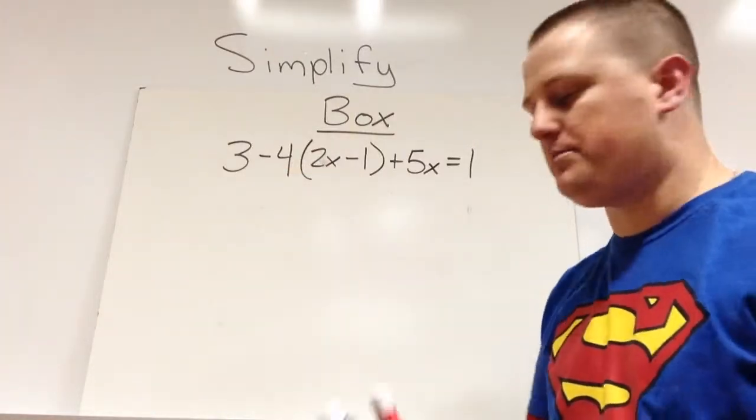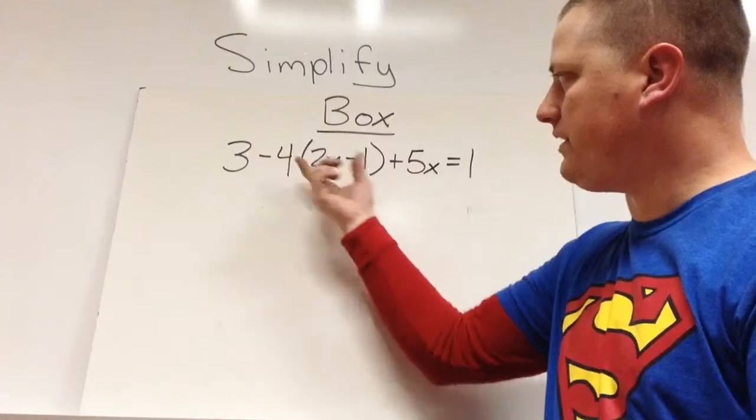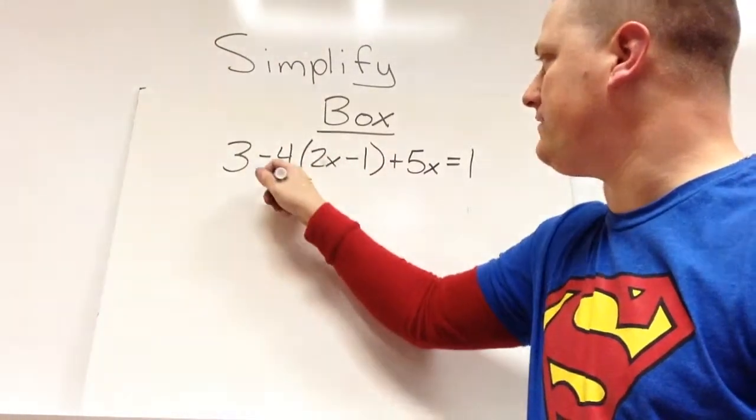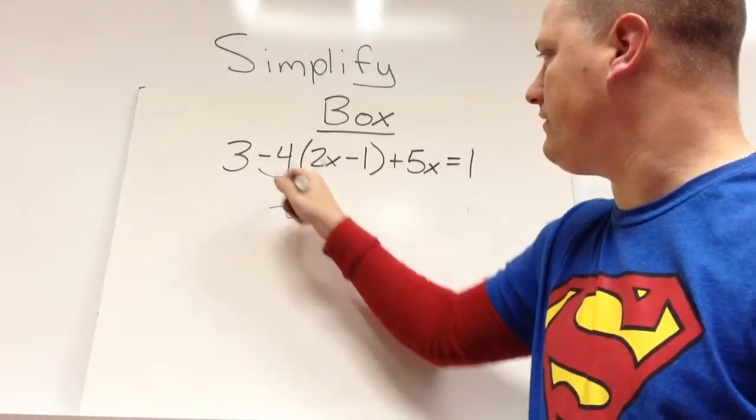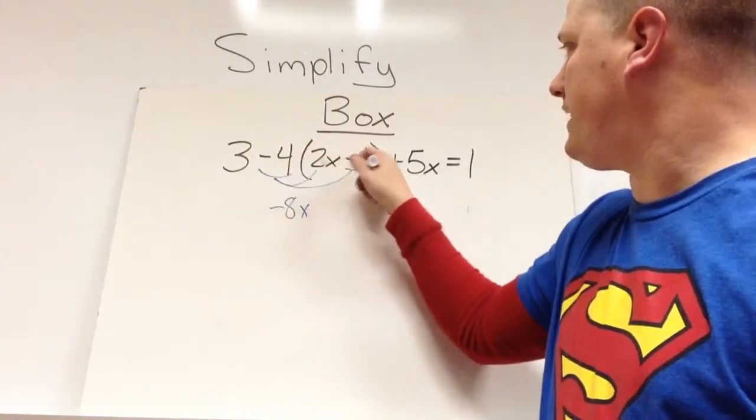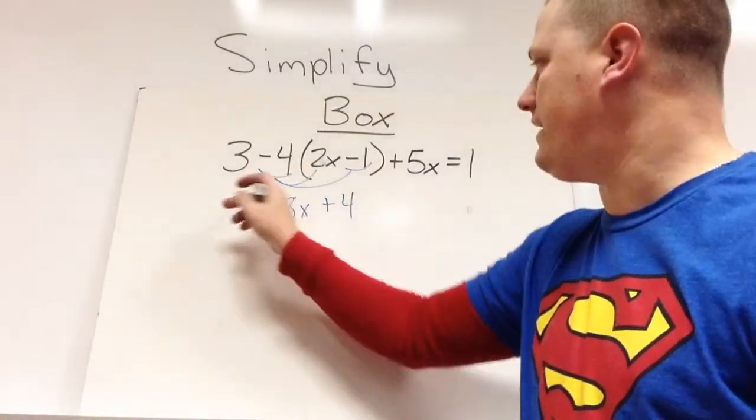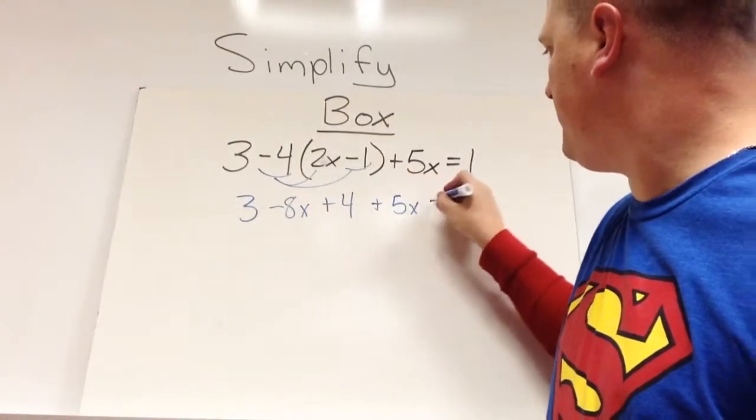So here I want to simplify this problem. First thing I have to do is look for any distributing. If there's a parenthesis, I need to multiply by negative 4 because of the minus sign. So this is going to give me negative 8x, negative 4 and negative 1 make positive 4. And I just bring everything else down, so the 3 comes in front, positive 5x equals 1.